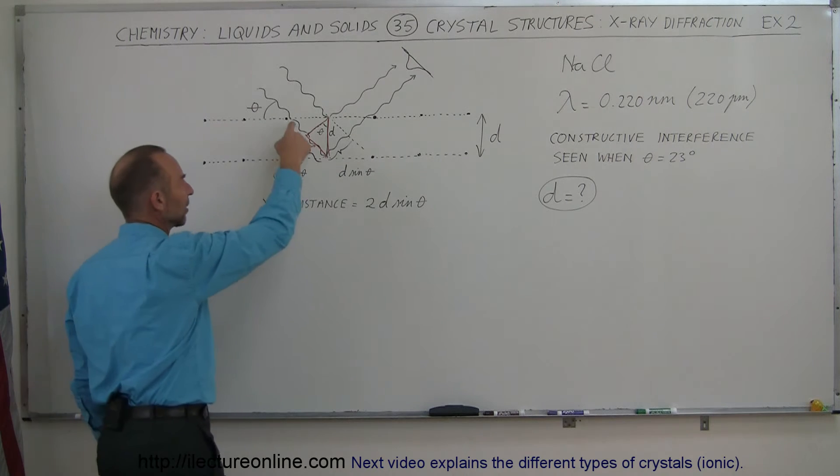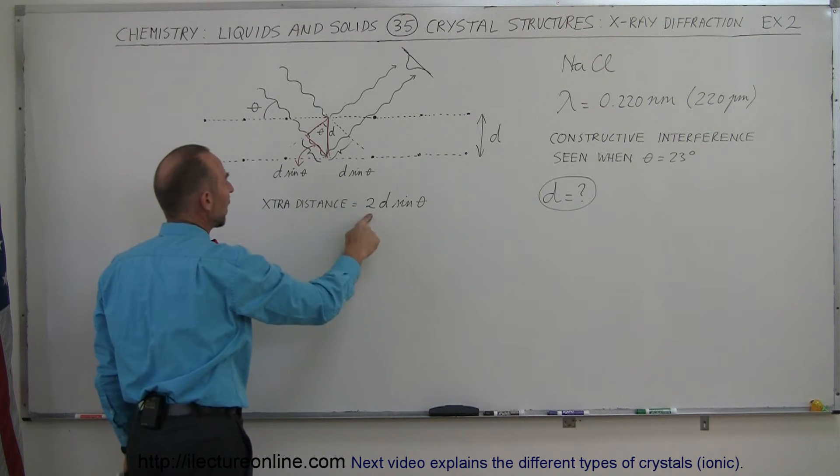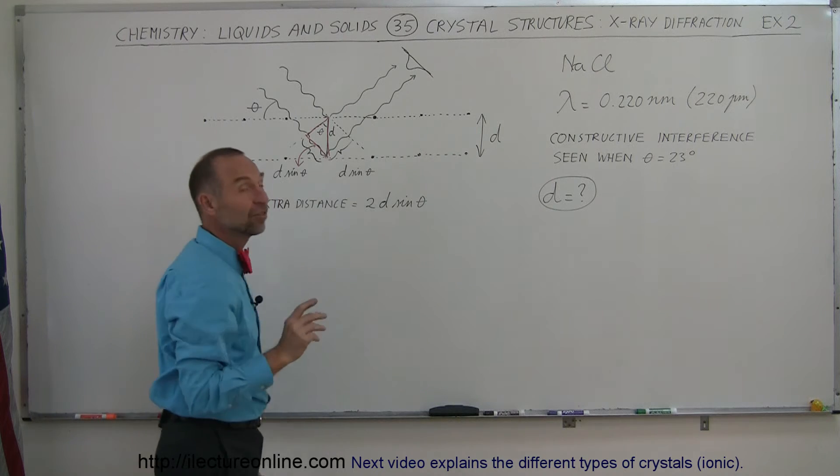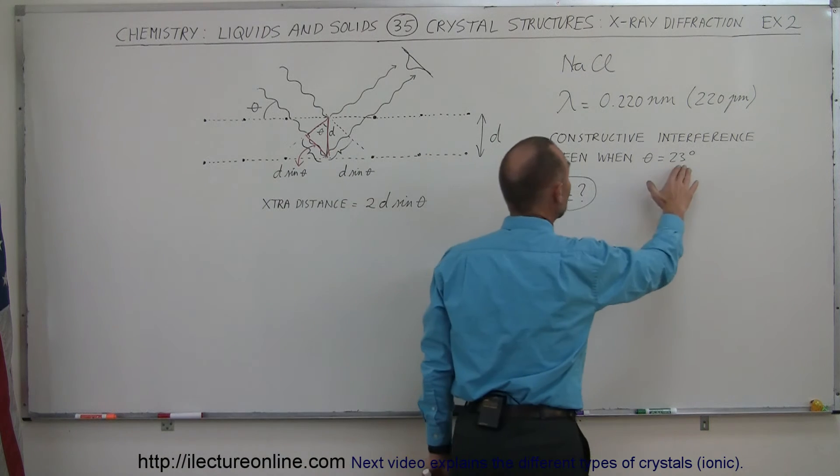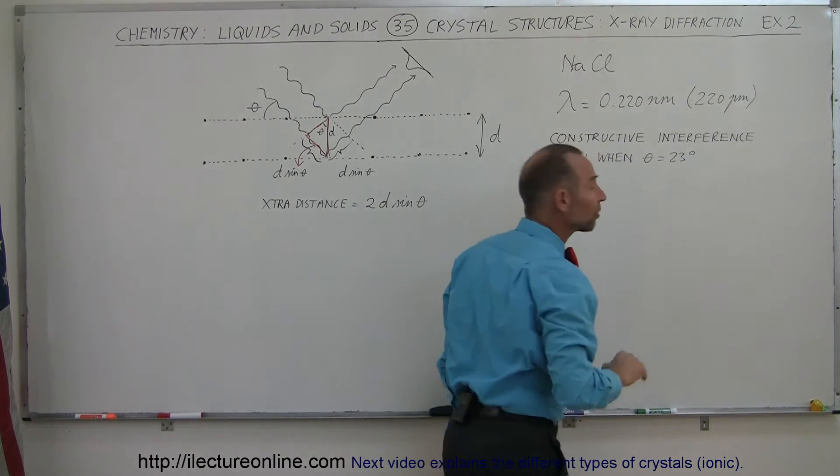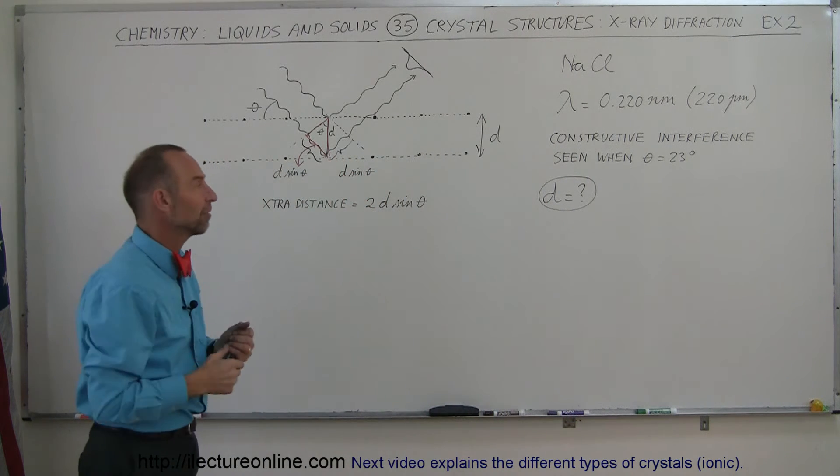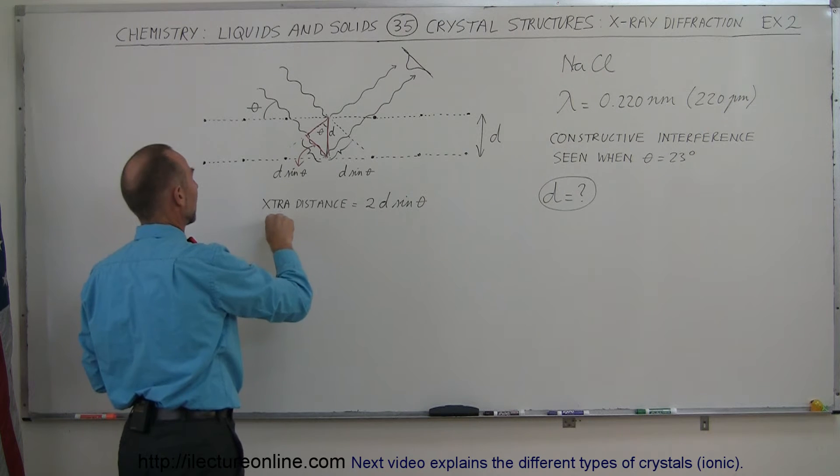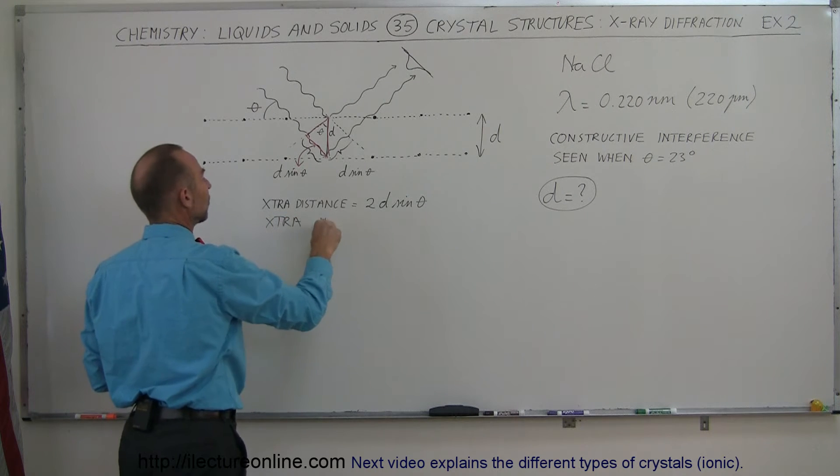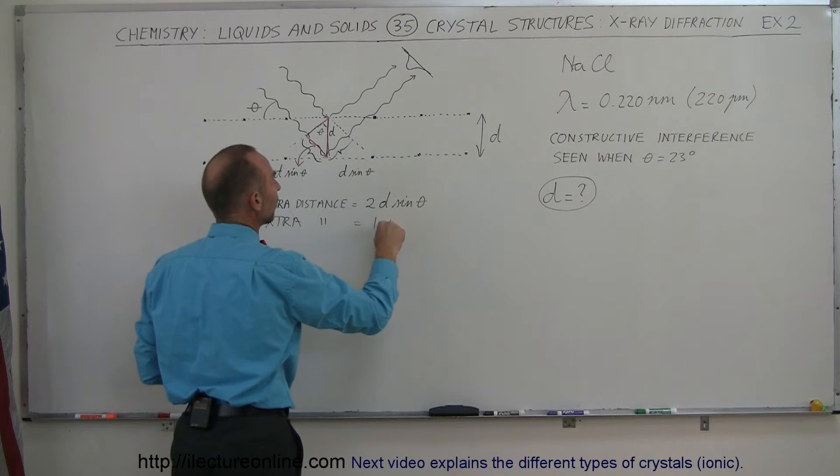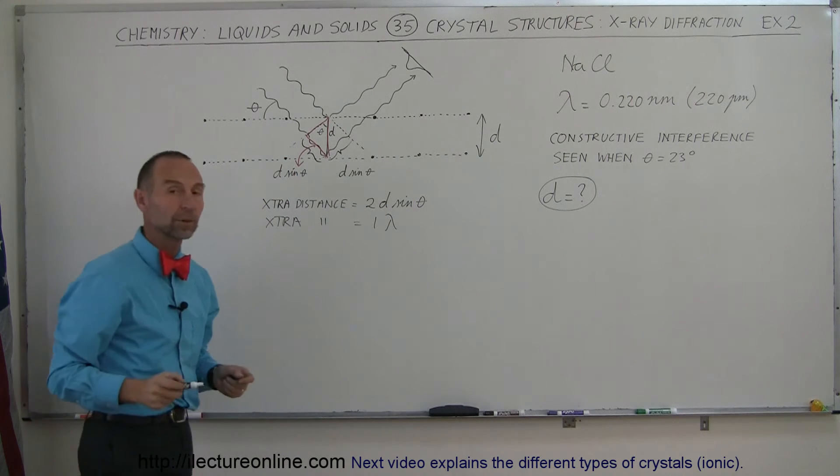So the extra distance traveled by the second x-ray beam is 2 times d sine theta. And since constructive interference was seen when the angle is 23 degrees, constructive interference means that the phase shift was a full wavelength. So that means that the extra distance, in this case, extra distance was also equal to one full wavelength.